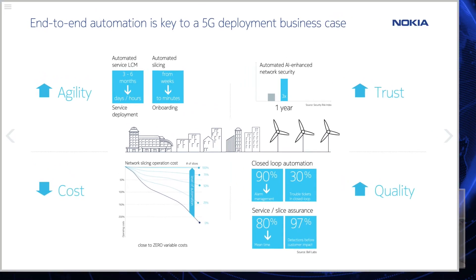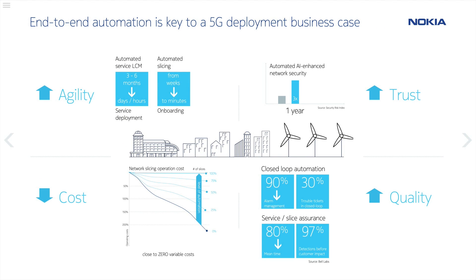Network automation becomes key in the 5G and distributed cloud world. Looking at the top left, lifecycle management and automated lifecycle management makes the network more controllable and increases its agility. Additionally, network slice creation needs to be automated, as well as validation of those network slices — that leads to fast time to market. On the top right, there's automated AI-enhanced security that mitigates threats and increases customer trust. On the lower left, we reduce costs with automation, especially for network slice creation. And on the lower right, there are other impacts: lowered alarm management costs, faster closure of trouble tickets, reduced customer impact of outages, and improved network uptime. It's critical to invest in automation to manage the network, assisted by artificial intelligence and machine learning.